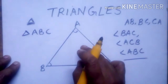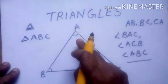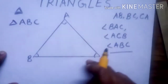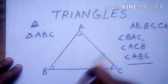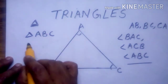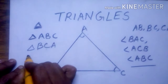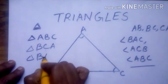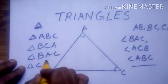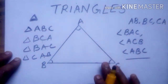We can write the triangle in any order. We can call it triangle CAB, or triangle ACB, or triangle CBA. In any order it is correct — triangle BCA, triangle BAC, or triangle CAB. Any order is acceptable.